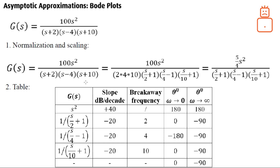The same information applies to the pole at minus 10: slope of minus 20 dB/decade, breakaway frequency at 10 rad/s, phase going from zero to minus 90 degrees. If you add up all the phase contributions across all frequencies, you expect the final phase plot to start from zero degrees and end at minus 90 degrees.